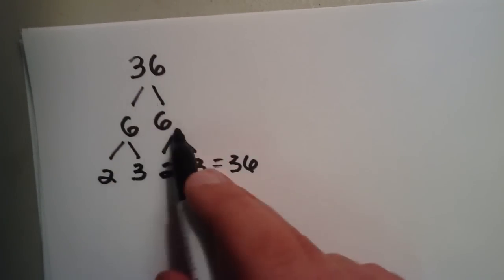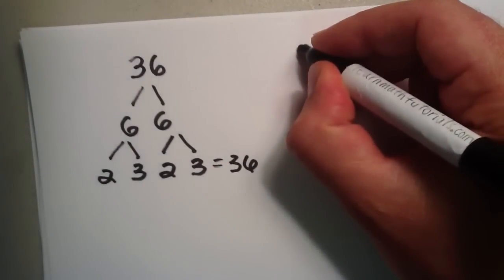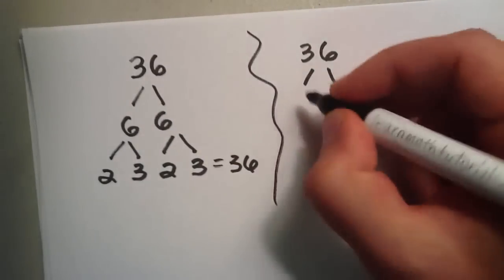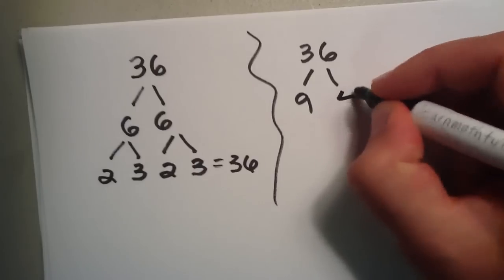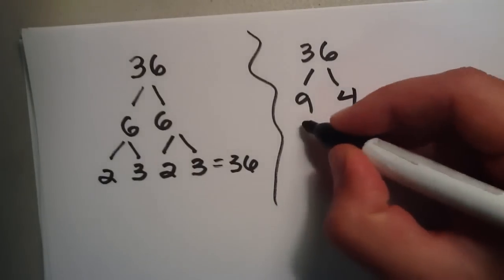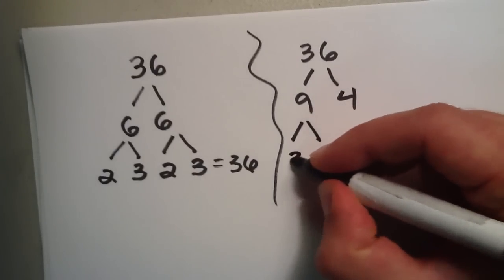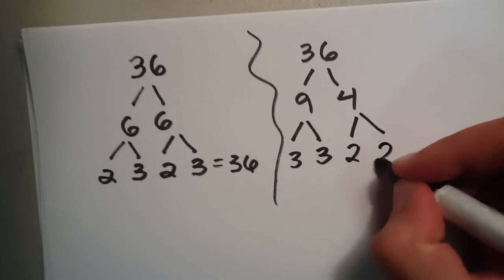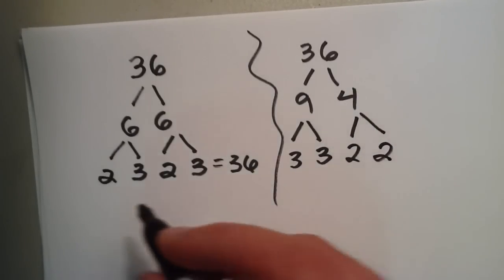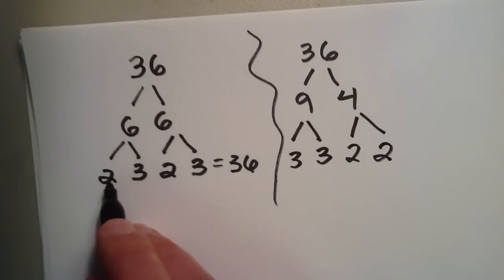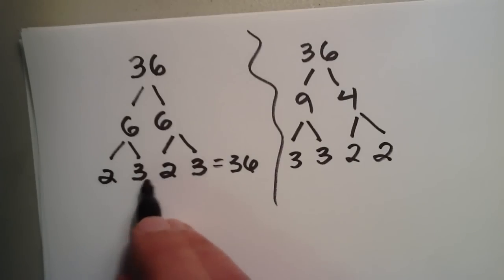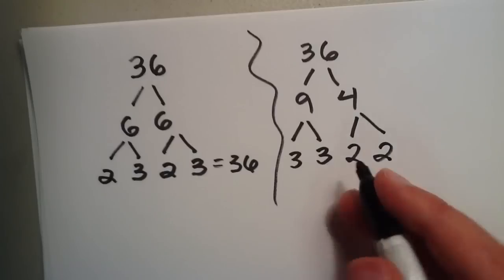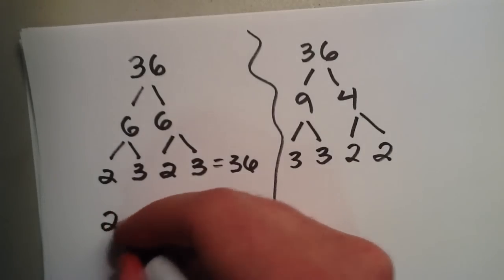It doesn't really matter the order that we break it apart. We could actually say 36 is the same thing as 9 times 4. 9 is the same thing as 3 times 3, and 4 is the same thing as 2 times 2. So once again we have 2 times 2 times 3 times 3. So the order doesn't matter.